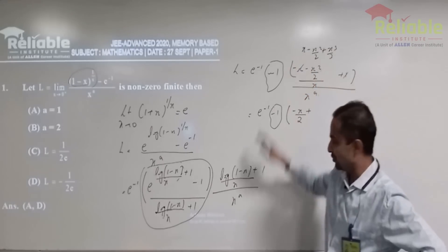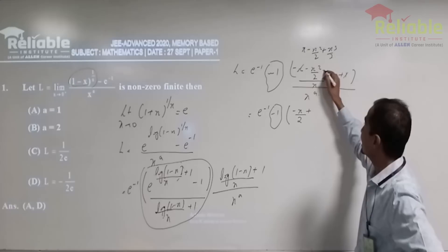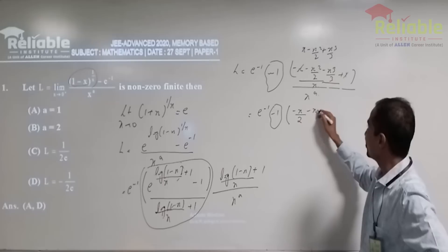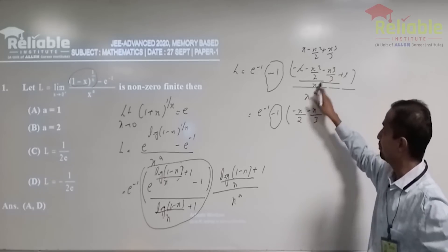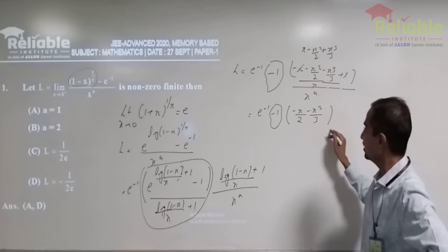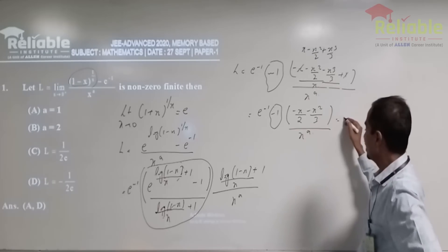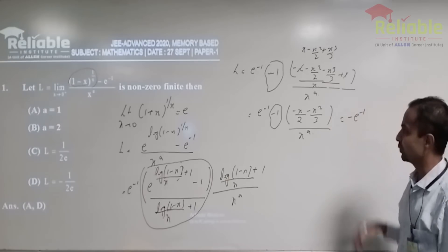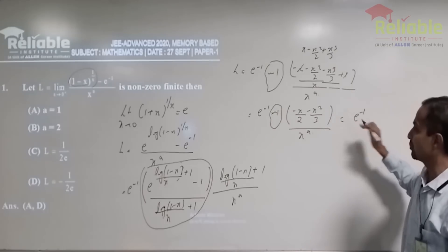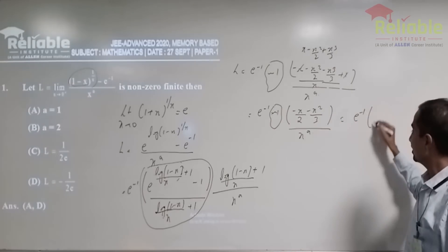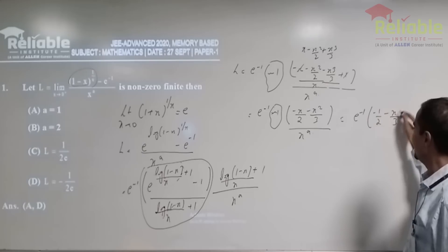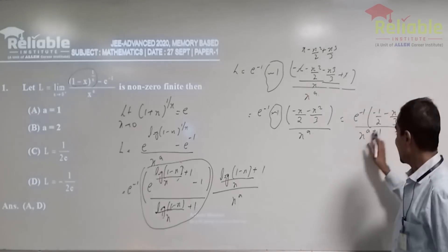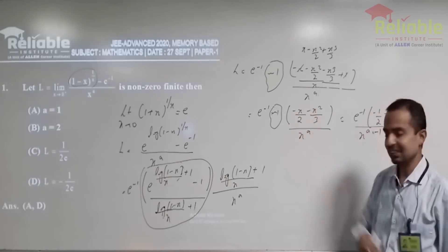Instead of x, we are having minus x here. So minus x cube by 3, so essentially you are going to get minus x square by 3 by dividing over x and here you are having x to the power a. So in the end, what you are going to get is minus e to the power minus 1, this is tending to 1, e to the power minus 1 and here minus half minus x by 3 upon x to the power a plus 1, a minus 1, right? 1x gets cancelled off.